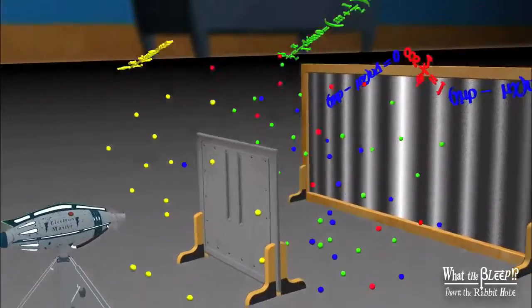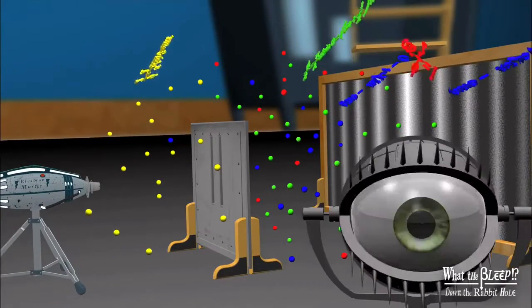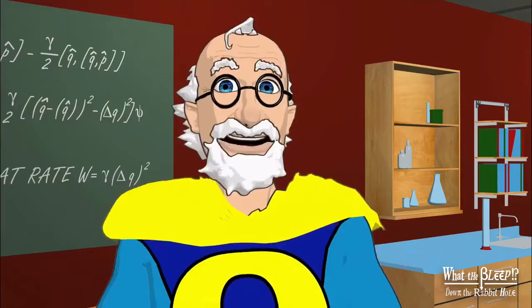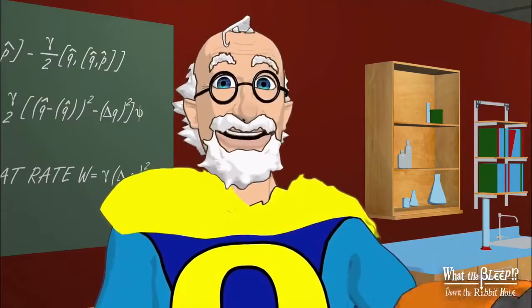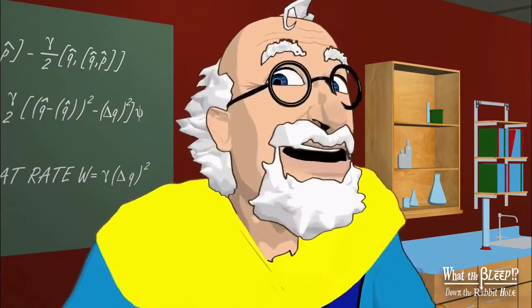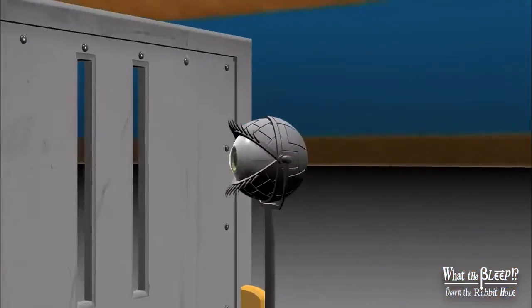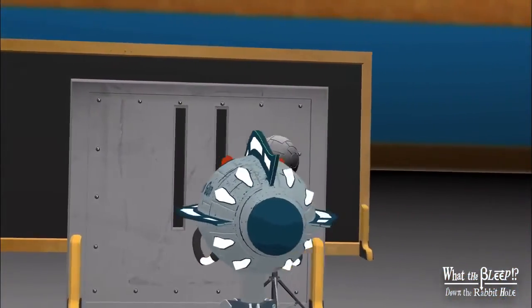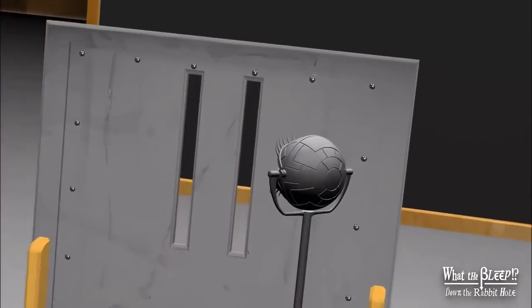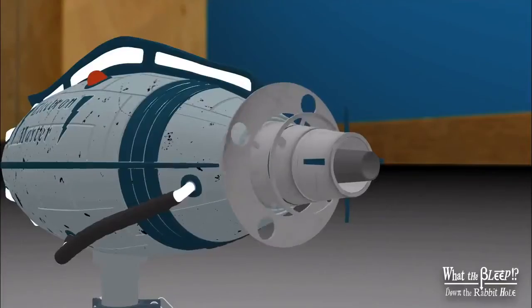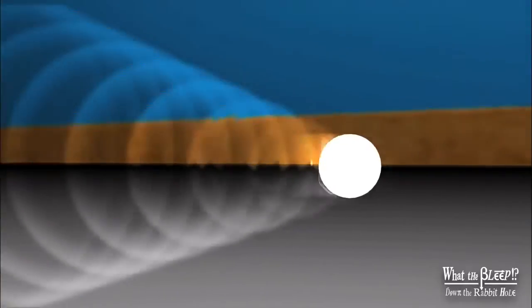But physicists were completely baffled by this, so they decided to peek and see which slit it actually goes through. They put a measuring device by one slit to see which one it went through and let it fly. But the quantum world is far more mysterious than they could have imagined.